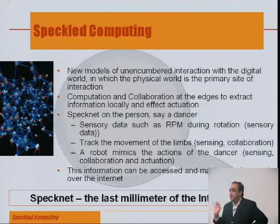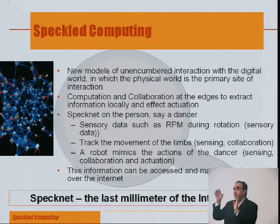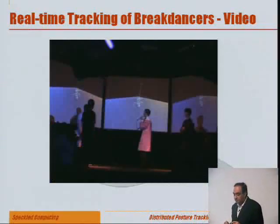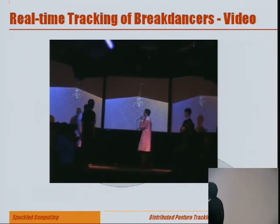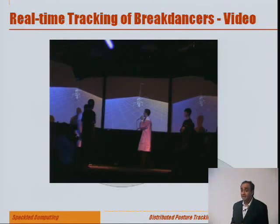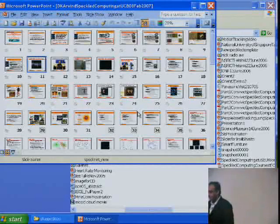If you were to have a spec net on a person — say a dancer — you can use it as a traditional sensor network, getting information such as speed of rotation, revolutions per minute, and putting that onto a screen. We did that and there's a video. That's the most exciting part — a video of breakdancers, where you put specs on them while they're spinning on their heads, and you can put up information as to how fast they're rotating.